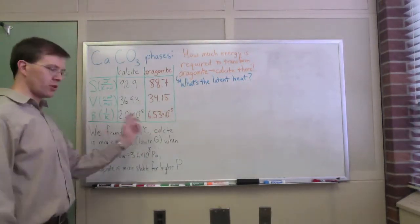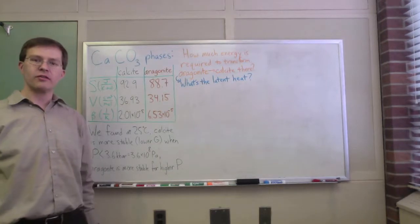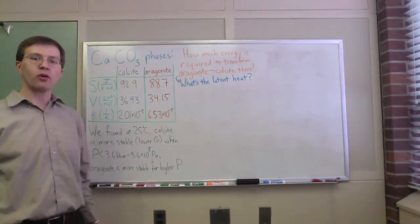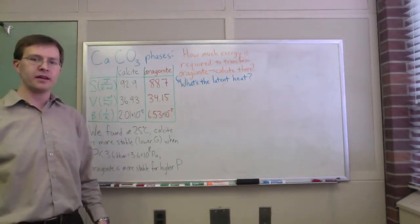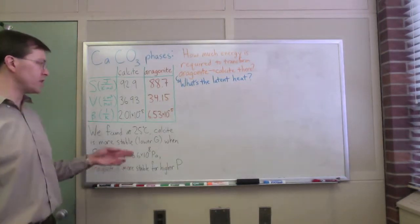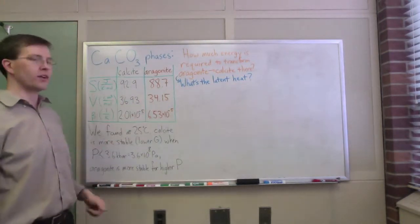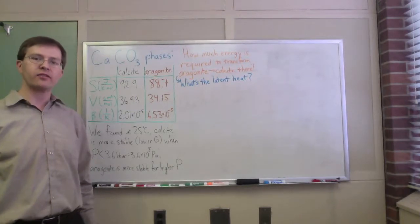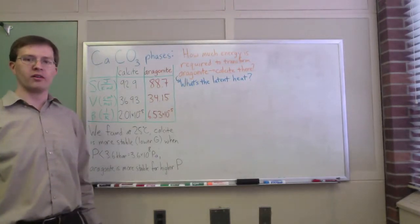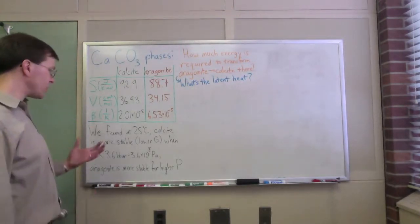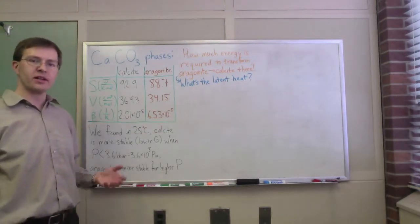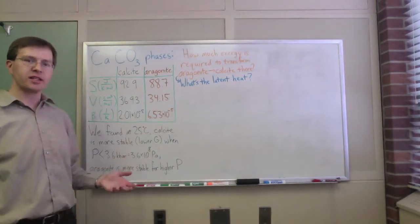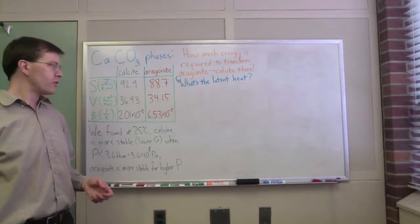We've got the entropy per mole of each one, volume per mole, thermal expansion coefficient for each one. You can get a lot more things—these are the ones we're going to talk about today. In class we worked out important things using this data, which is all put together at standard temperature and pressure: 25 degrees Celsius and one bar of pressure.